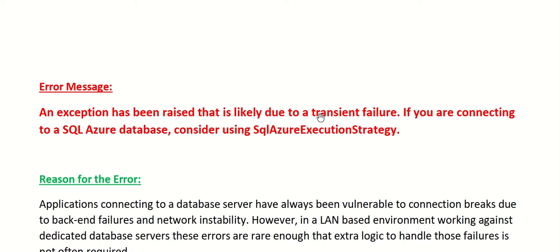In today's session, I'm going to explain an error scenario in ASP.NET Core Web API applications. This error is related to transient failure of connections with Azure SQL databases. It may happen on a SQL Server installed on a LAN also, but the possibility of this issue on a local LAN network is very low compared to Azure databases. The error message is: 'An exception has been raised that is likely due to a transient failure. If you are connecting to a SQL Azure database, consider using SQL execution strategy or SQL Azure execution strategy.'